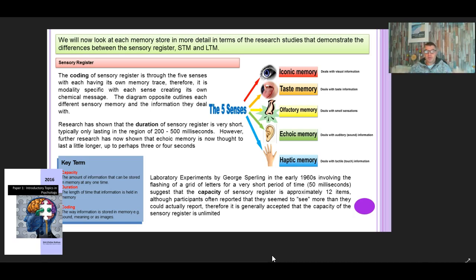So the coding of sensory registers through the five senses. So there you go. So iconic, taste, olfactory, echoic memory, haptic.